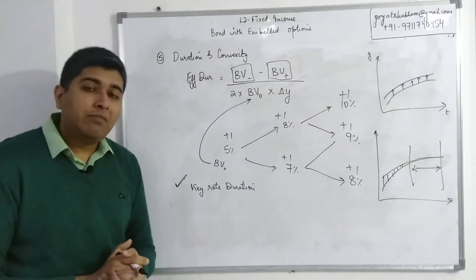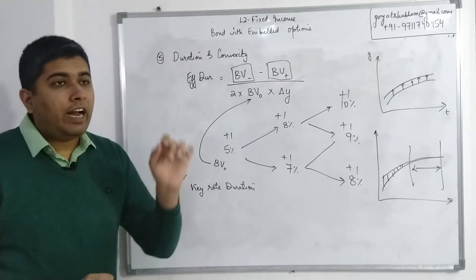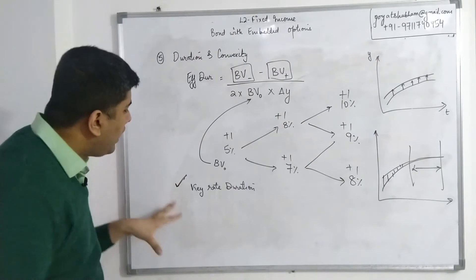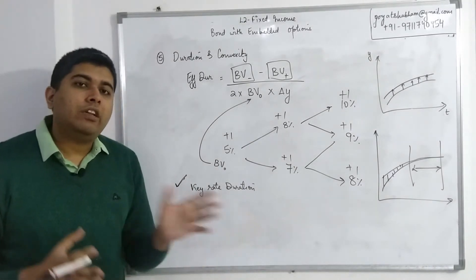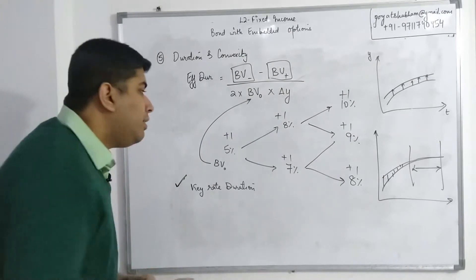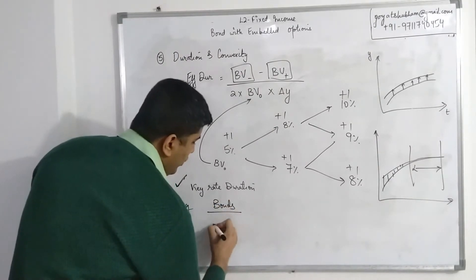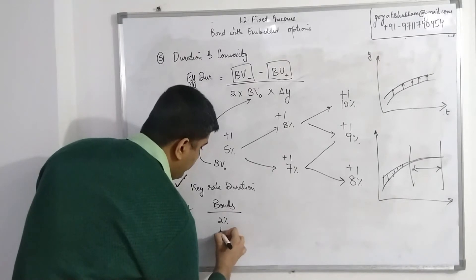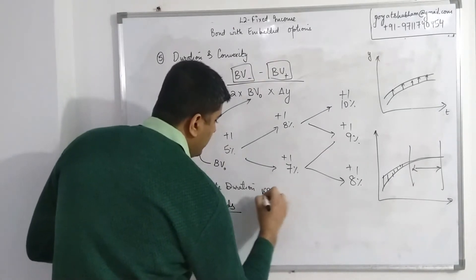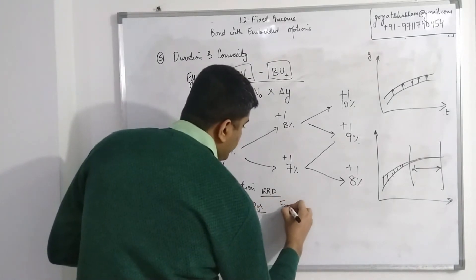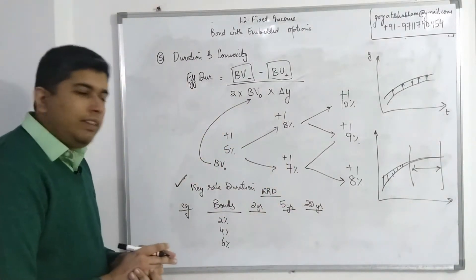Key rate duration is again measuring how sensitive my bond is to changes in interest rate, but not all interest rates—interest rate at a specific time interval. Key rate duration, again this is one of those calculations which requires proper computer programs to do, so as such calculating key rate duration is not really relevant for your syllabus. What is relevant is interpreting. I'll just make a small table. Let's say you have three bonds: a 2% coupon bond, 4% coupon bond, and 6% coupon bond. And then you have certain key rate durations given to you for 2 years, 5 years, and let's say 20 years—so short term, medium term, long term.